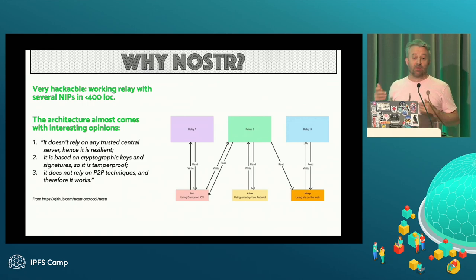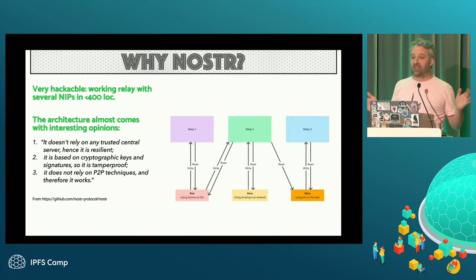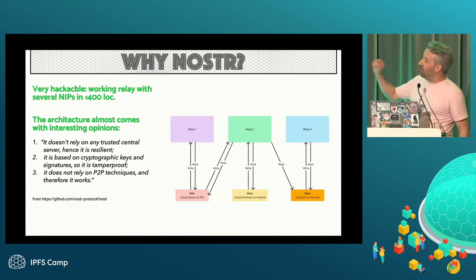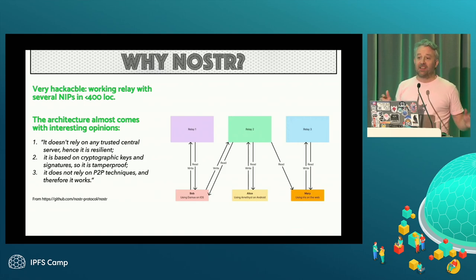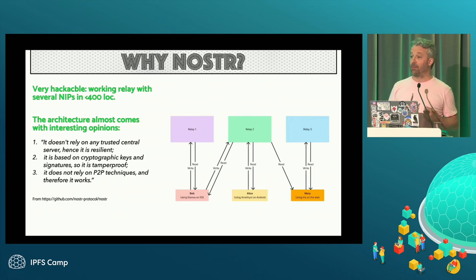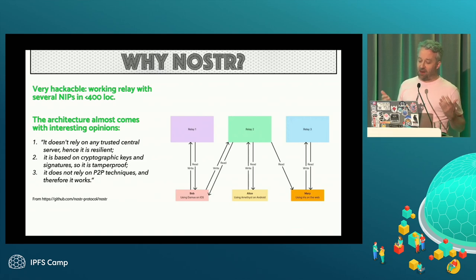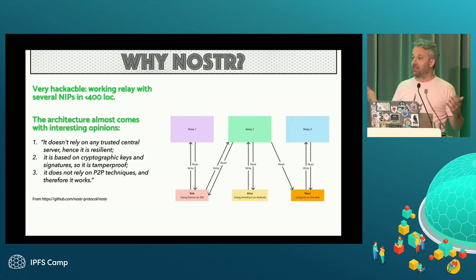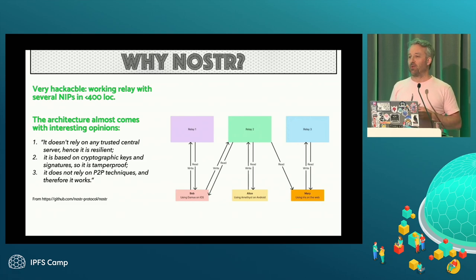Why did I pick Nostr? Well, first it was really easy — this is like 400 lines of code, so that's a basic complete implementation, not a high quality one, but complete. I was really interested in the architectural approach Nostr takes. They have three principles: one, it doesn't rely on a trusted central server, hence it is resilient — IPFS is like that too; two, it's based on cryptographic keys and signatures, similar to CIDs and hashes; three, it does not rely on P2P techniques — and therefore it works.